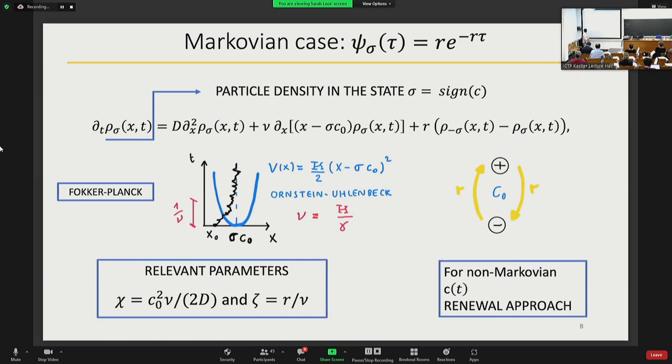Just to give a simple description of how one handles this type of process, let's stick to the simplest case which is the Markovian case where the waiting time distribution is just an exponential distribution. In this case the switching between the two states happens with a constant rate r in time. We can characterize the state of the system by looking at the sign of the minimum of the potential sigma and the particle position x. The evolution of the density of the two species is described by a standard Fokker-Planck operator plus this exchange term where you have a rate of exchange of particles between the two species.